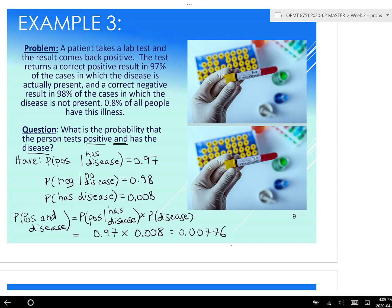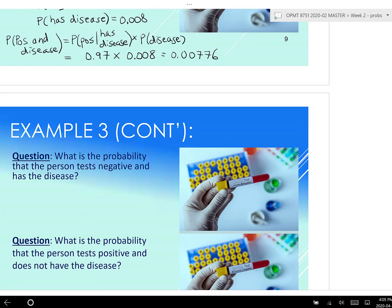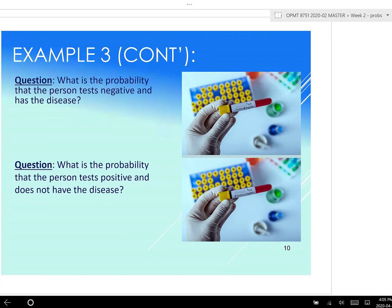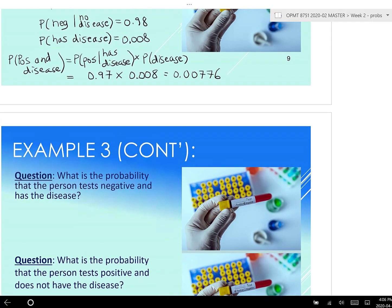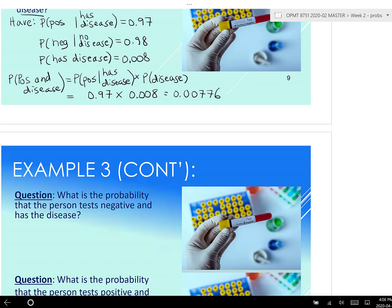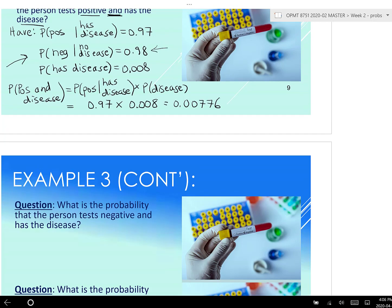Let's keep going with this example. We're actually going to revisit this example in the Bayes Rule lecture. Now, what is the probability the person tests negative and has the disease? So we want negative and has the disease. This is a little bit sneaky. We have negative and no disease. We have positive and disease. How can we deal with negative and disease?